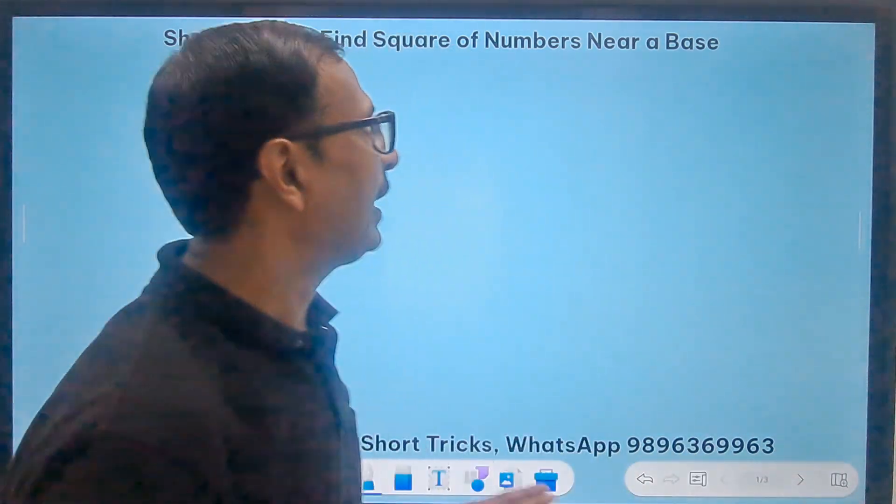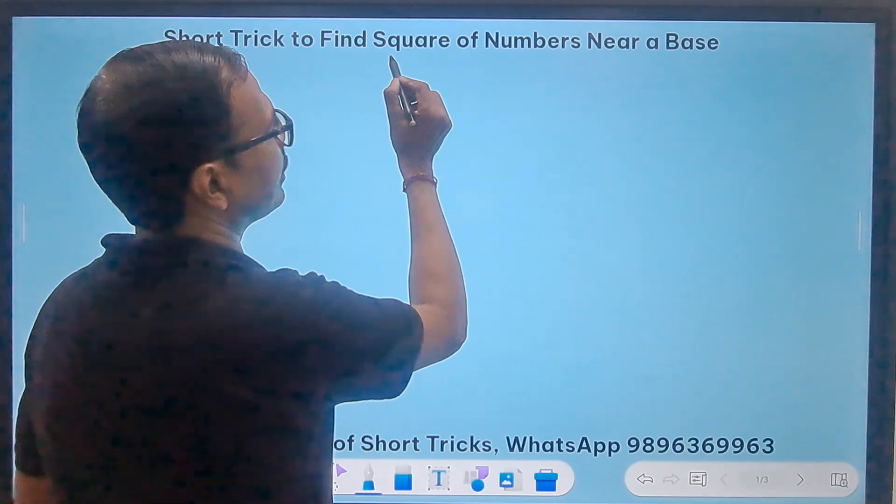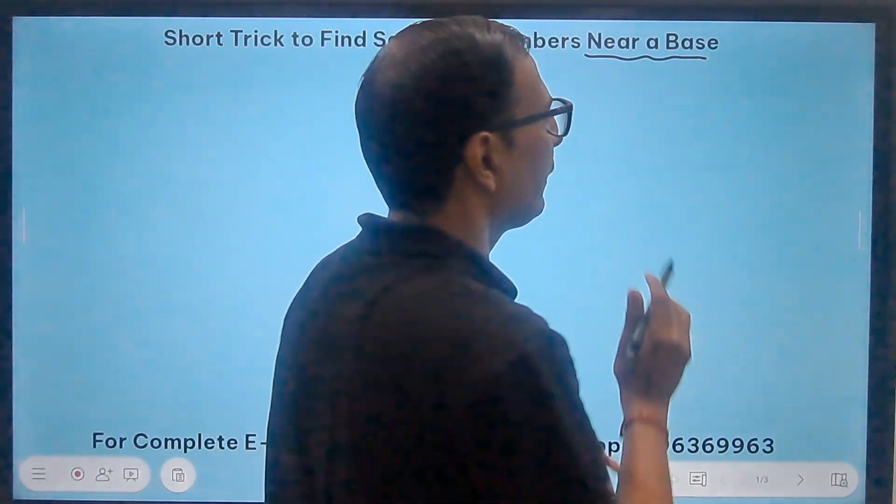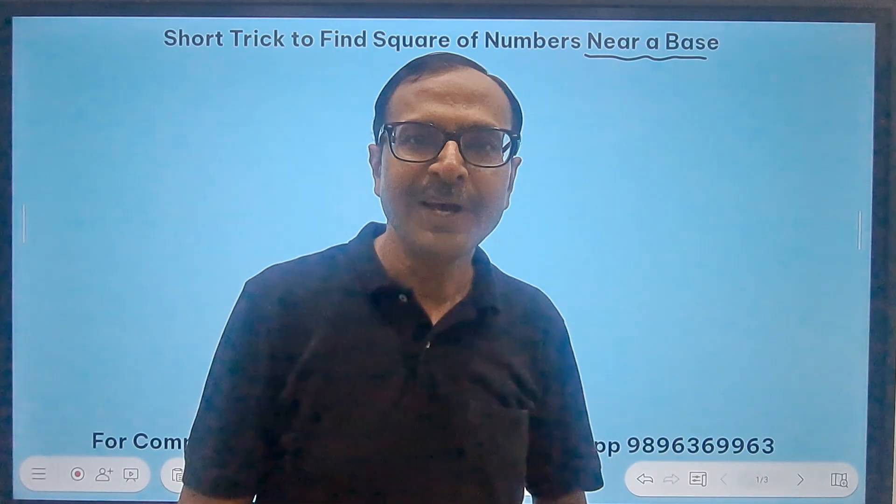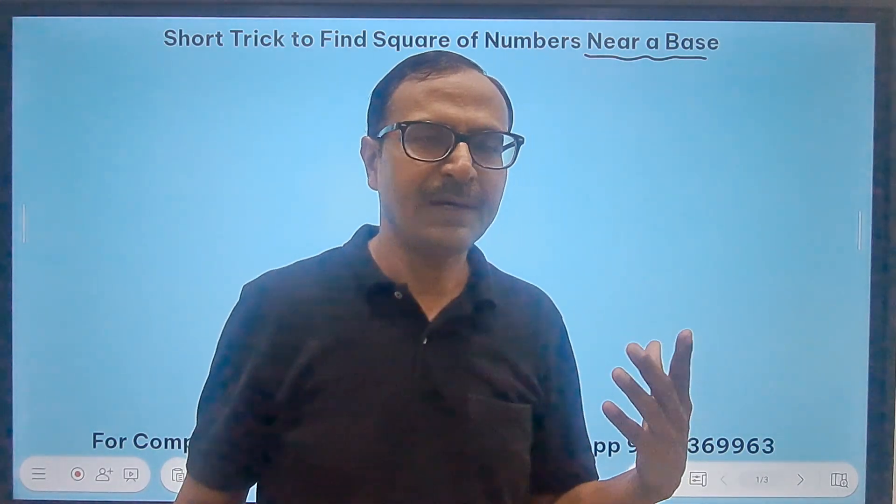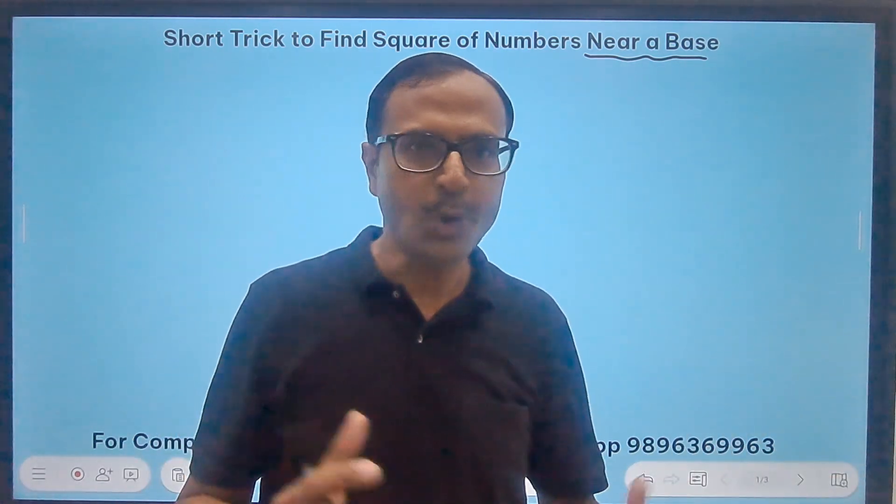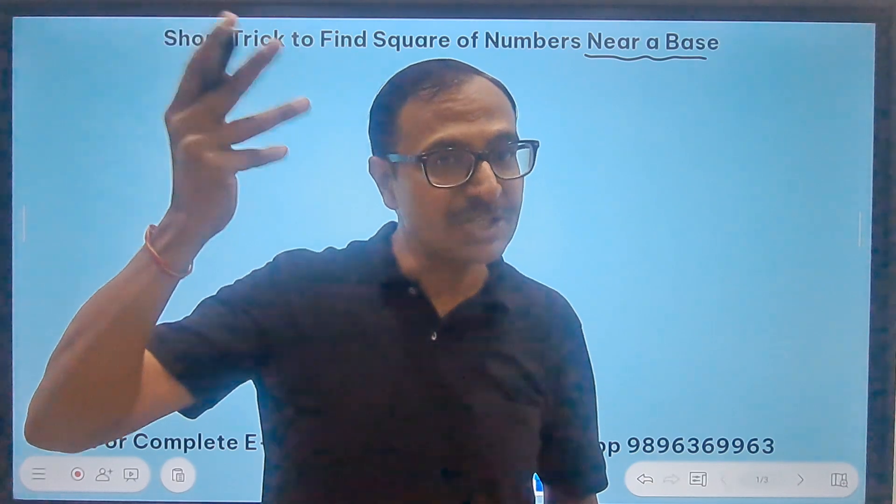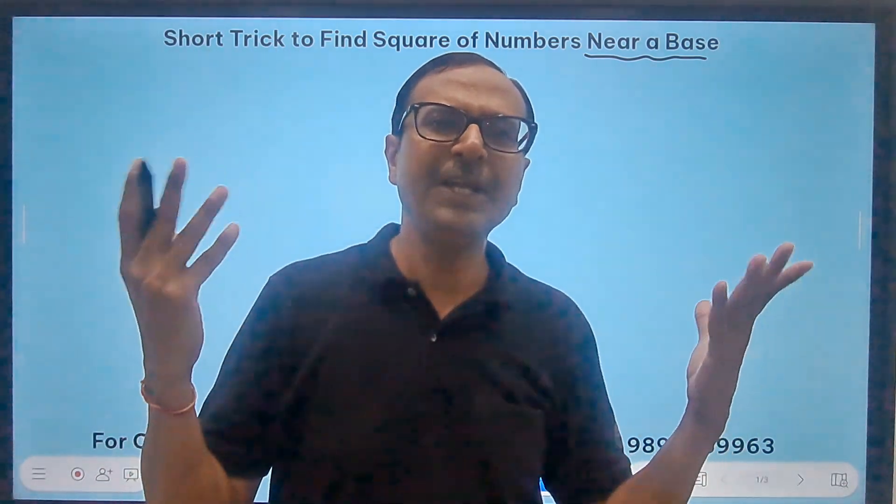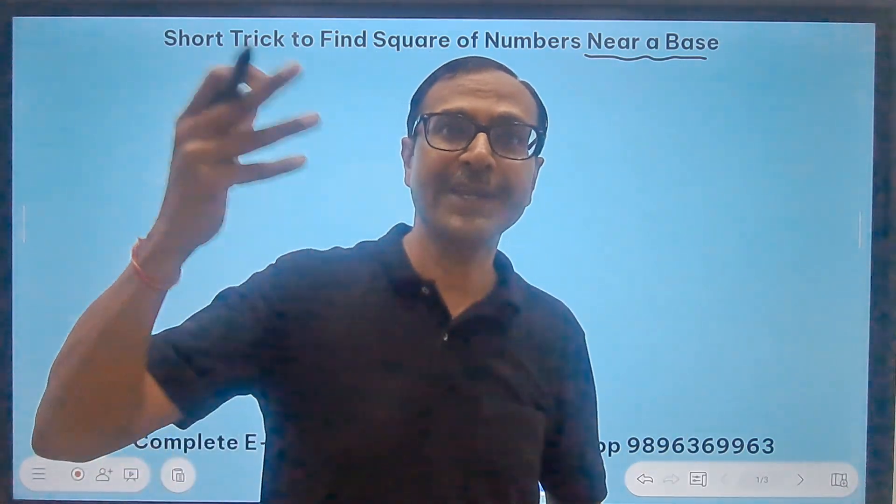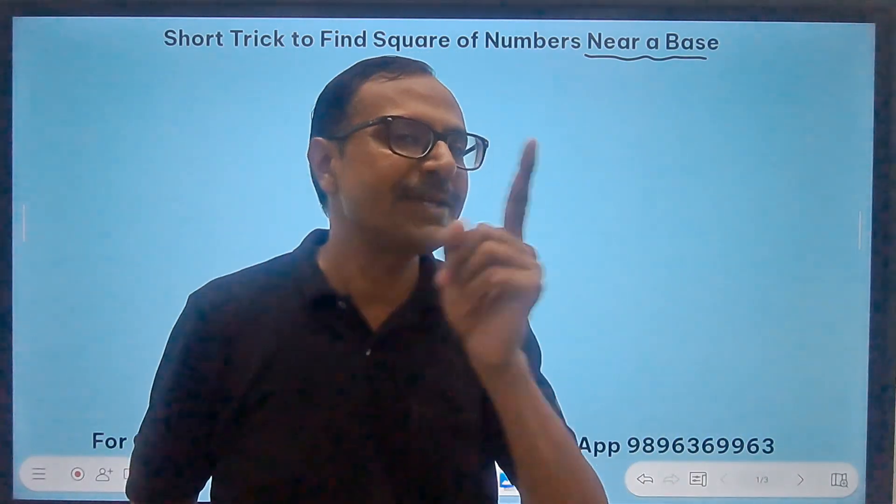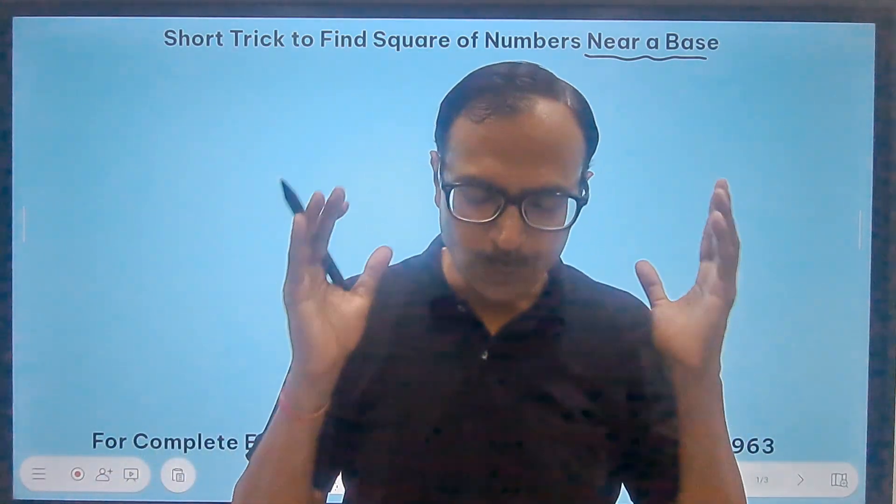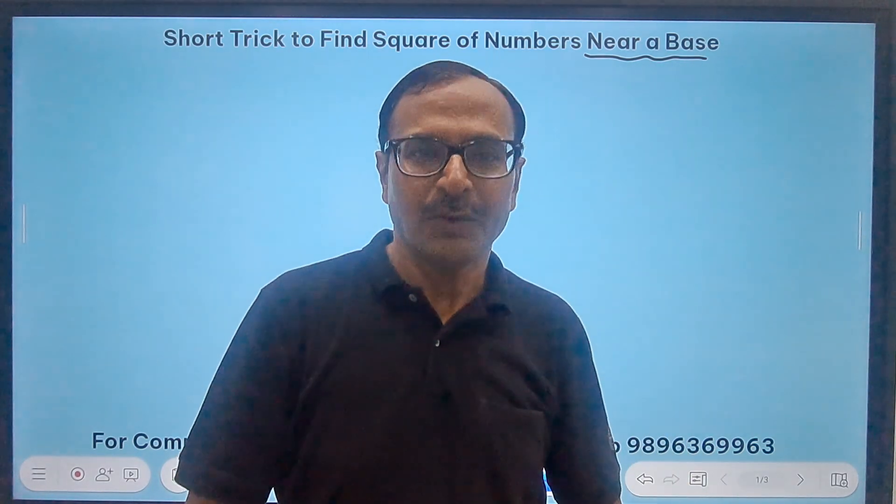Like in this video, I am going to take up squaring of numbers which are near a base, like it can be near to say 700, which is like 692 or maybe 712. Or it can be near to 1200, 1207. So all these numbers can be squared using this amazing short trick which I am going to tell you right now in this particular video.